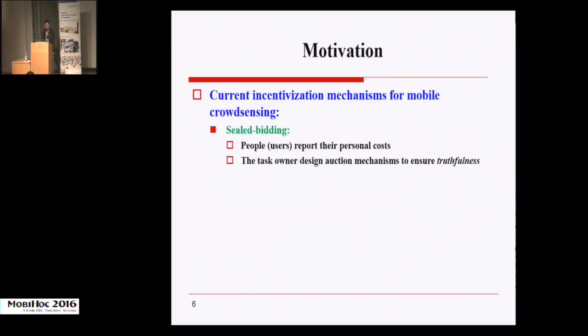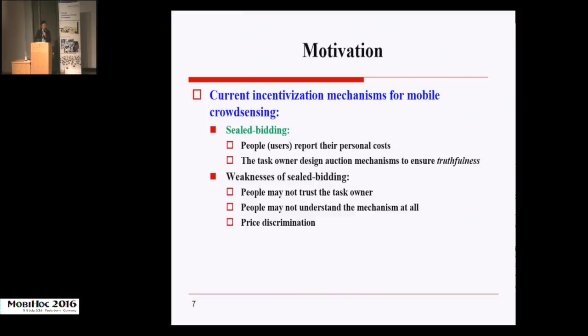There are a lot of studies on incentivizing participation in mobile crowdsensing. However, most of them adopted the sealed bidding approach, where users report their private costs to the task owner. The task owner decides the task assignment and payment to the users. These studies usually make use of auction mechanisms to encourage users to behave truthfully. However, there are several drawbacks about sealed bidding. Firstly, people may not trust the task owner. Secondly, people may not understand the auction mechanisms. And finally, the sealed bidding approach results in heterogeneous payments to selected users, also known as price discrimination.